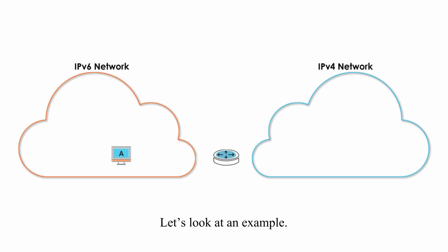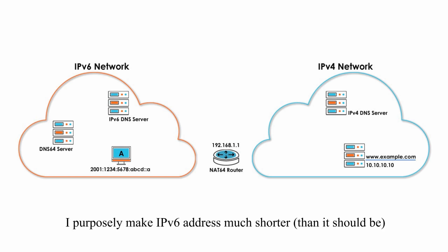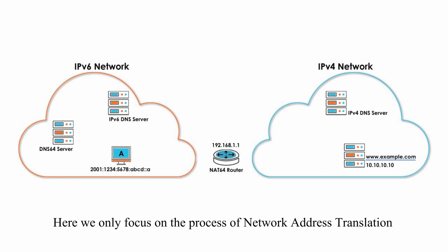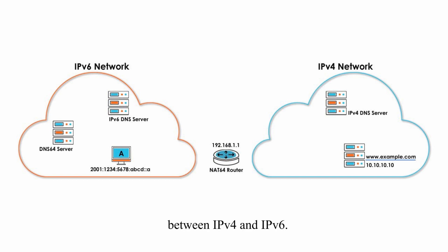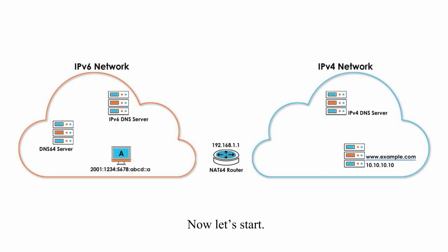Let's look at an example. In order to simplify the process, or just for the sake of learning, I purposely make IPv6 addresses much shorter, and for IPv4 addresses I use a private and simple address. Here, we only focus on the process of network address translation between IPv4 and IPv6, so I don't want long and complicated IP addresses in our way. Now, let's start.